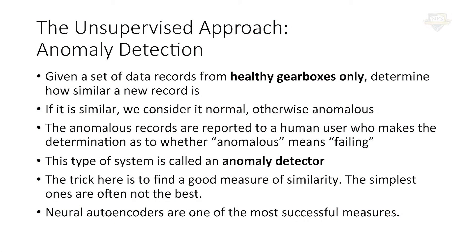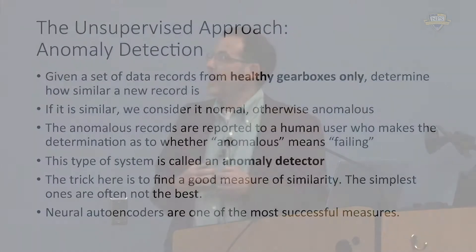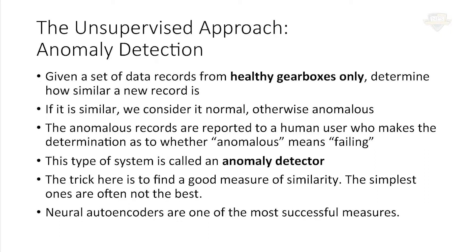So what could we do instead? We could do unsupervised learning. The idea is that we try to solve the problem based on a database of healthy gearboxes only, because that data is easy to come by. When we get a new record, we compare it to our known good data — if it's similar, we say it's normal; otherwise, we say it's anomalous and get a human expert involved. Anomalous doesn't mean bad, it just means different, and a human would decide whether anomalous meant failing or not. That kind of system is called an anomaly detector.